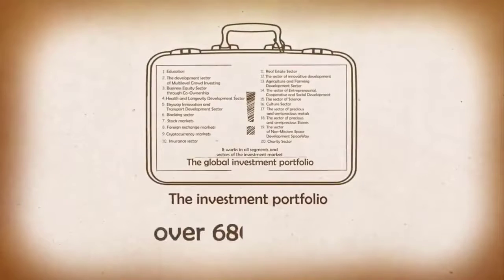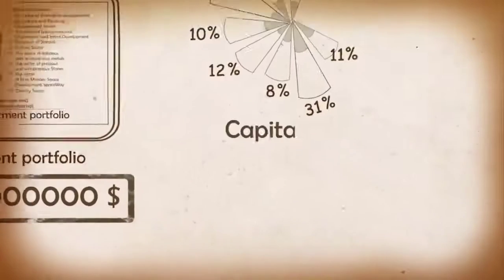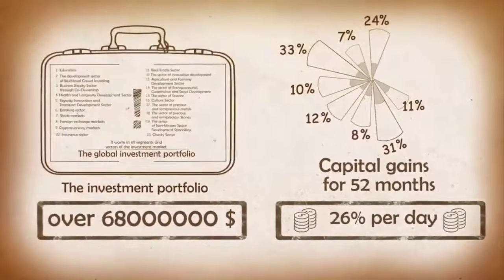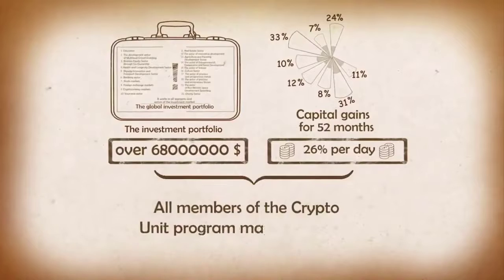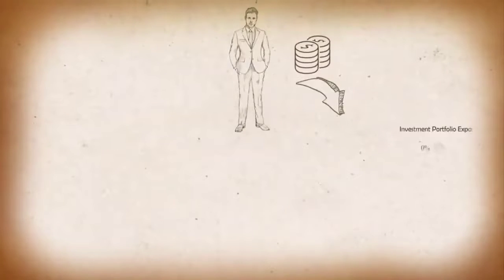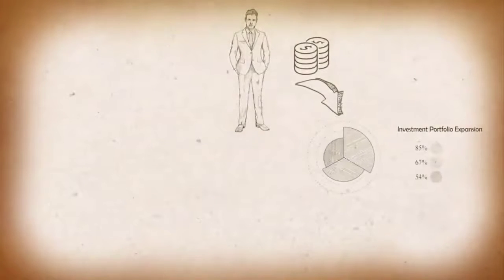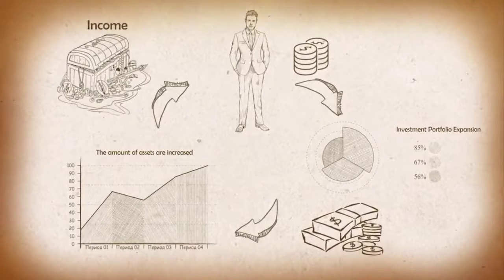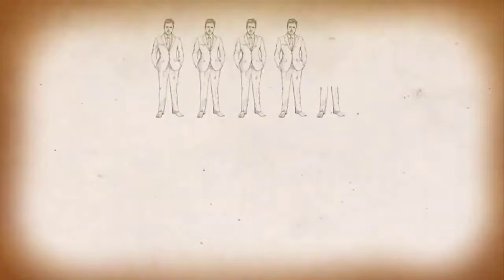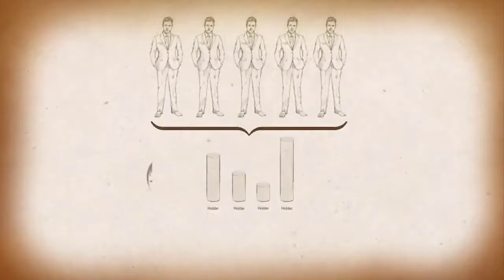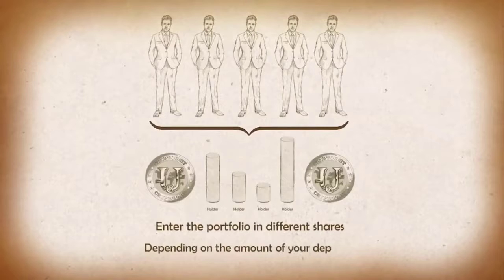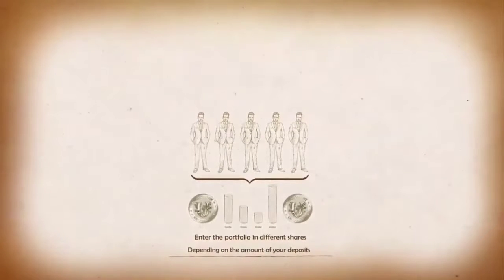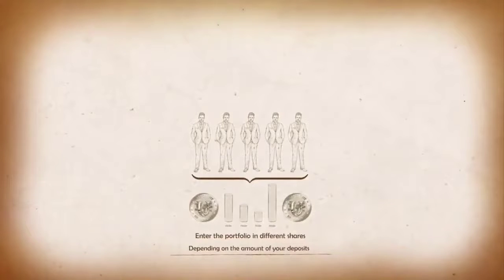We have already created an investment portfolio that is worth more than 12 million dollars. The capital gains for 52 months are averaged at 26 percent a day. This investment portfolio can include all participants of the Crypto Unit program. The funds received will be reinvested in the further expansion of the investment portfolio, thereby increasing the amount of assets and accordingly revenues. All holders of Crypto Unit digital assets are included in the portfolio in different shares depending on their amount of deposits. Based on historical data in the investment market sectors, many companies have the following returns.